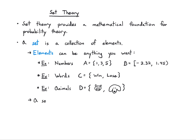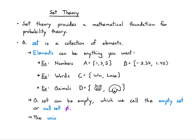A set can also be empty. We're going to call that the empty set or the null set, which I'll denote by the phi symbol — a zero with a slash through it, drawn in purple. And the universal set, big omega, is the set of all elements.